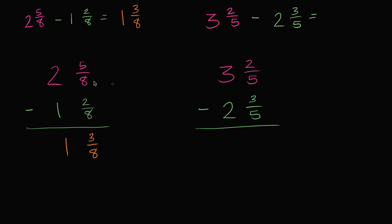And when you first try to do it, over here you had 5 eighths minus 2 eighths. That was easy to figure out. That's 3 eighths. But then over here you have 2 fifths minus 3 fifths. Well, that's hard. 3 fifths is larger than 2 fifths. So what can you do here?